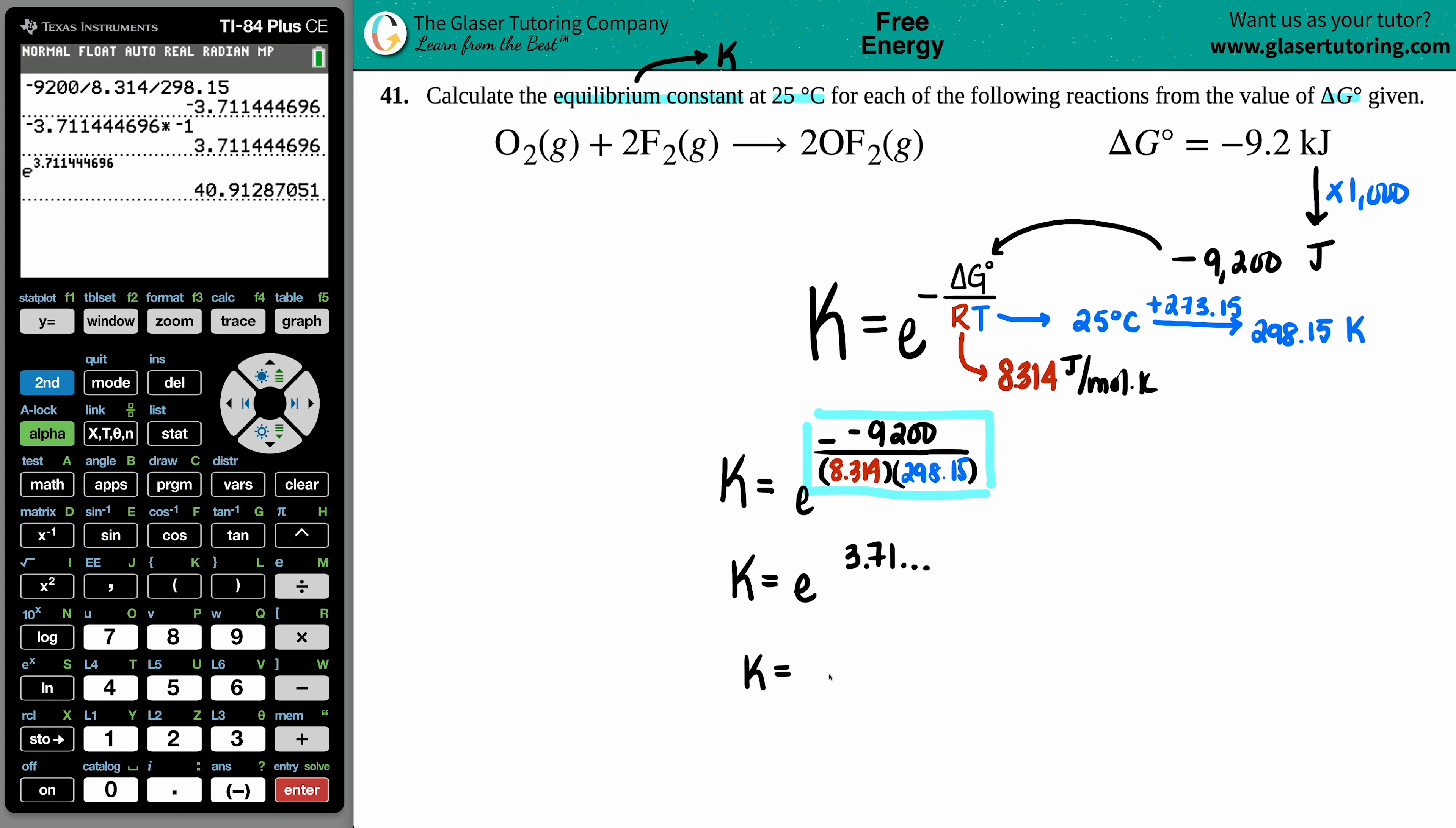But with proper sig figs, you had two sig figs for your delta G, so I'm only allowed two sig figs, so it would be 41. And that is the final answer. Keep in mind that for equilibrium constants there is no units, so it's just 41, and that's it.